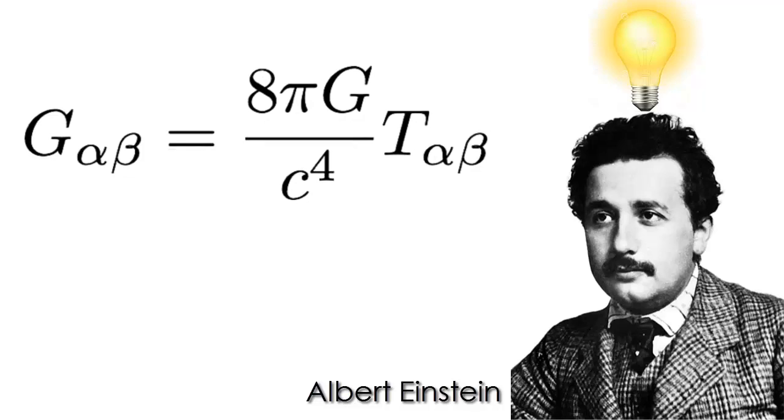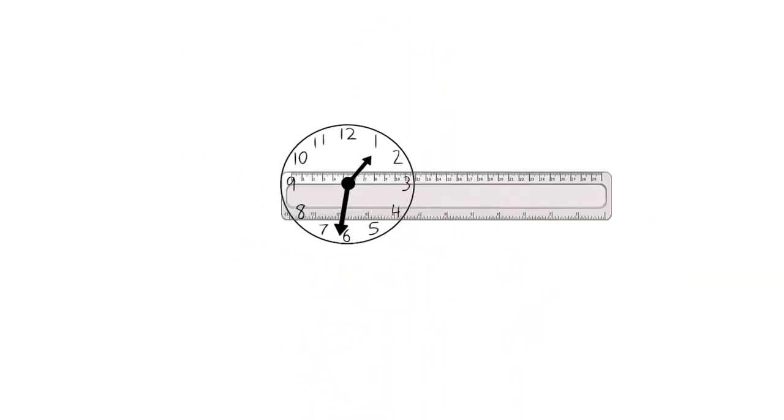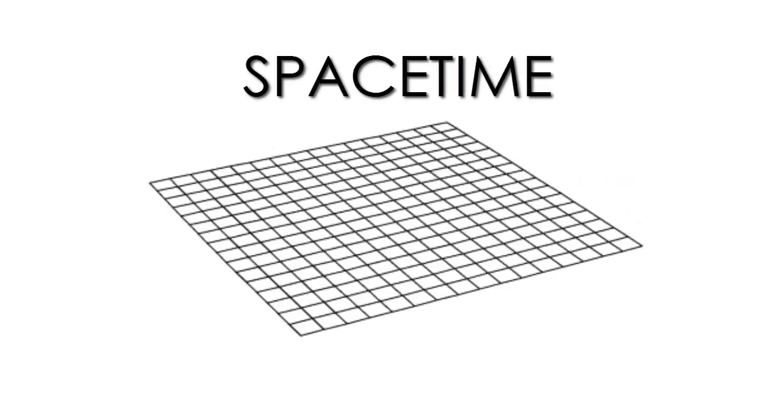Einstein's general theory of relativity changed the paradigm in physics. It modified forever the way we look at space and time. Instead of two radically different concepts, we now view them as one single entity, the space-time continuum.